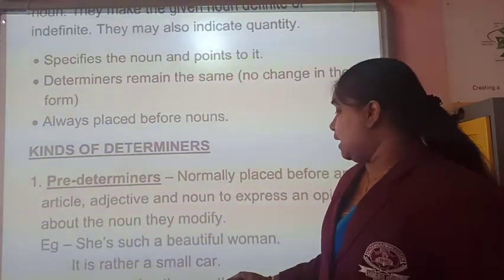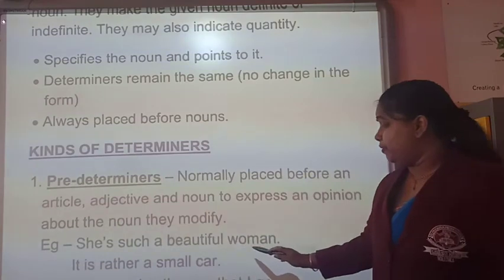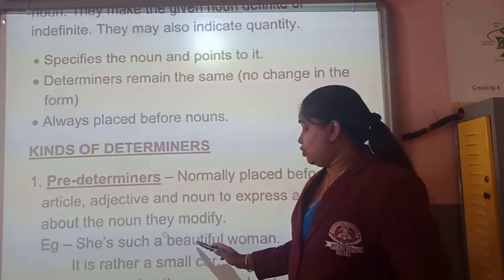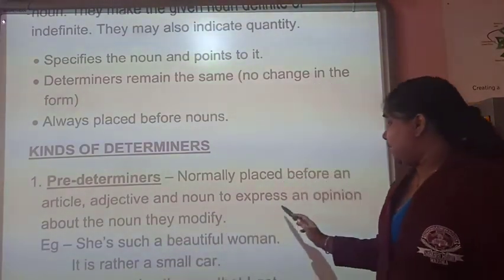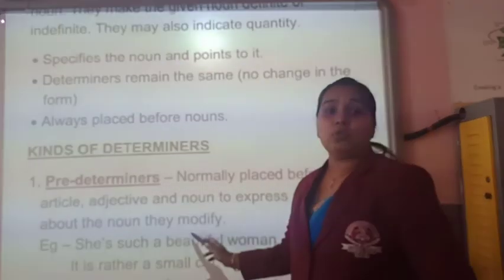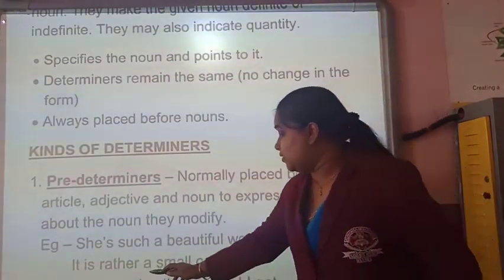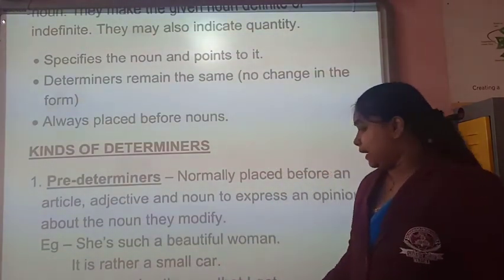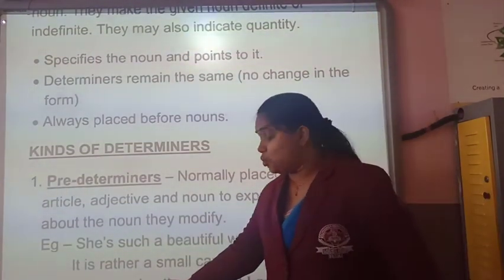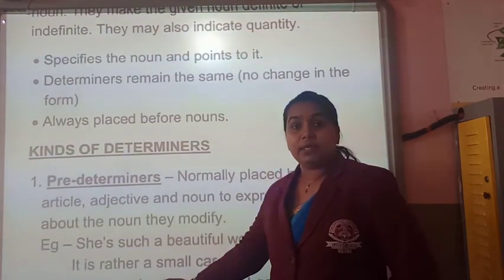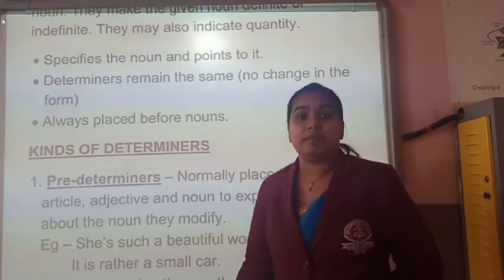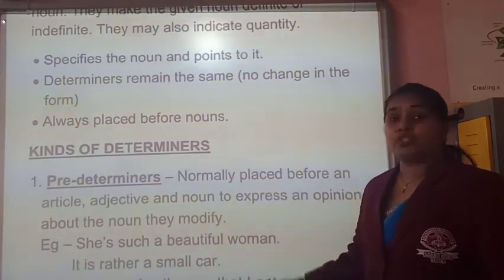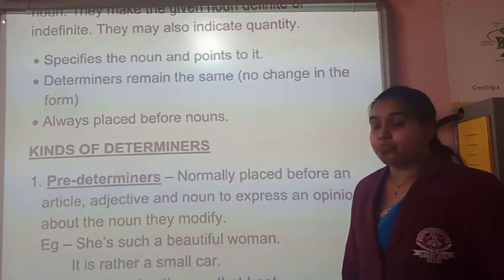As I am giving you an example: 'She is such a beautiful woman.' Here 'a', the article, is a determiner used before an adjective, to express an opinion about the noun they modify. 'It is rather a small part.' 'He gets twice the pay that I get.' Here the two determiners are 'twice', telling us the number of times, and 'the', which is the definite article. This is the way we use pre-determiners in our sentences.